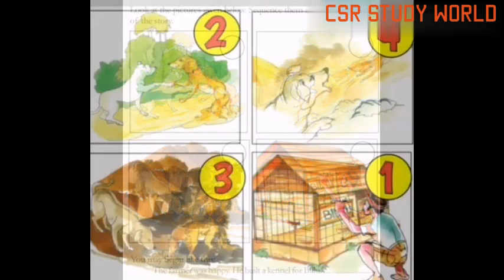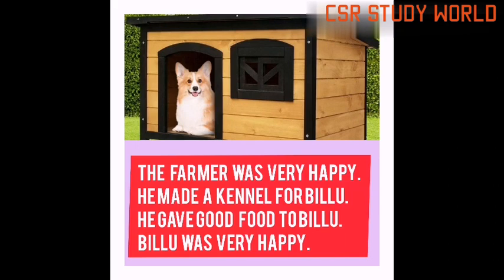Then what else did he make for him? The farmer was very happy. He made a kennel for Billu. He gave good food to Billu. Billu was very happy. The farmer was very happy; he built a kennel and gave good food.